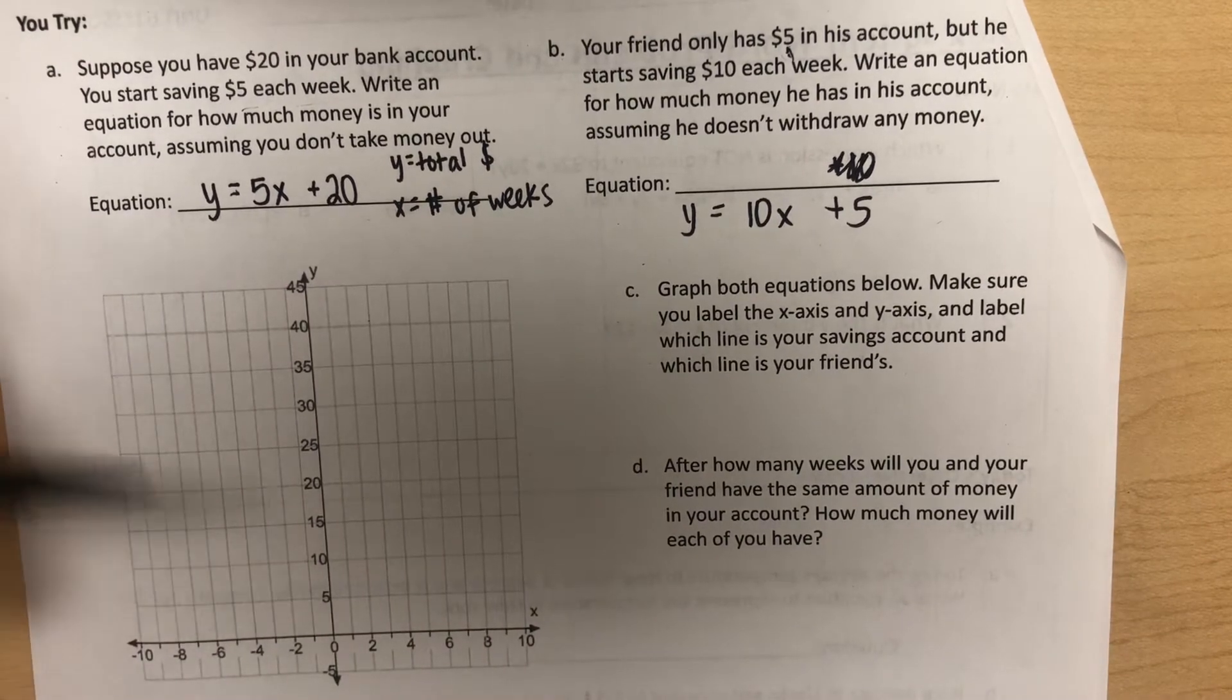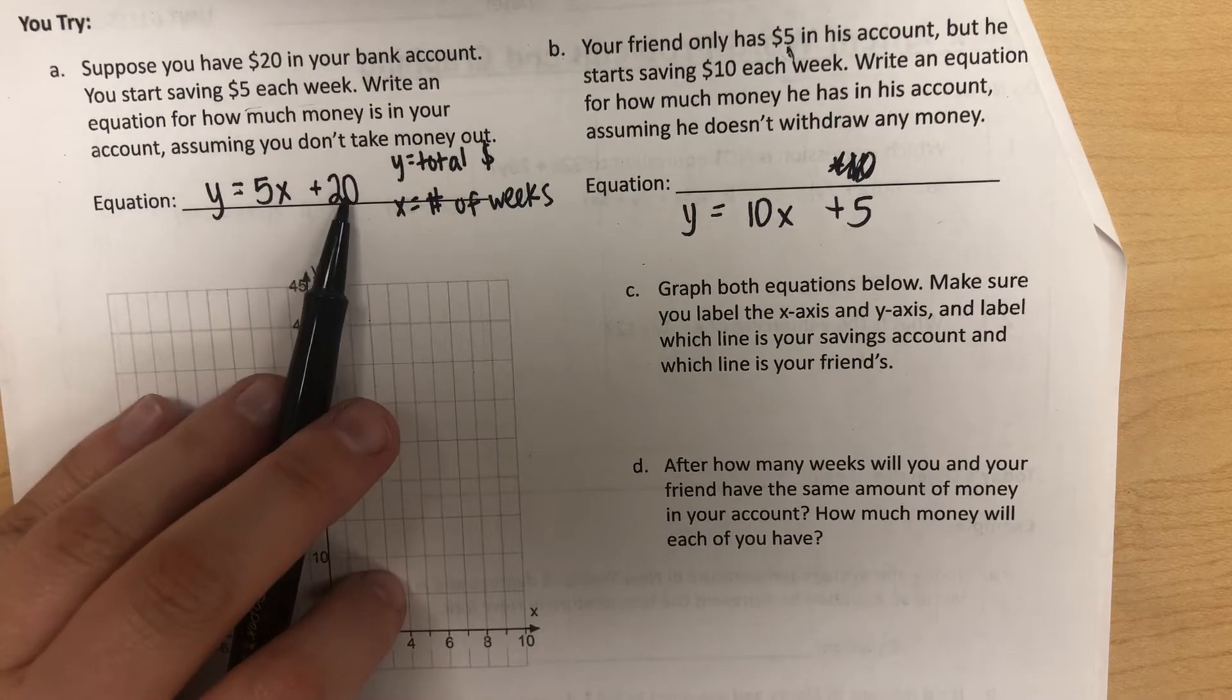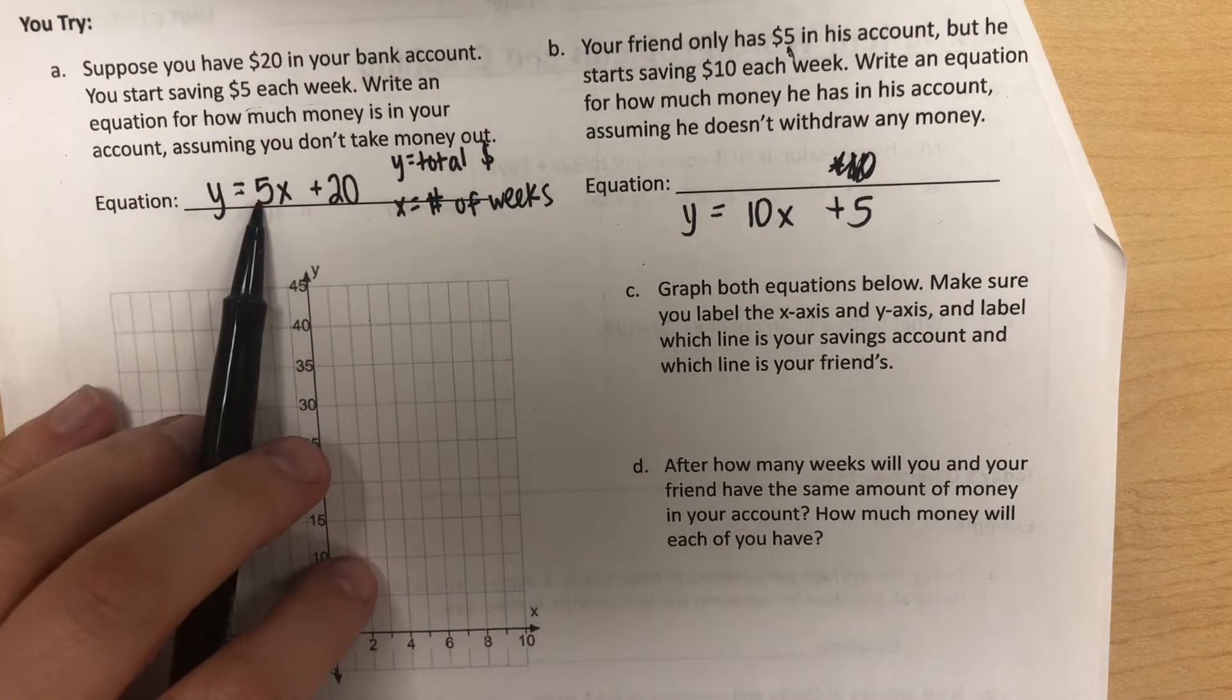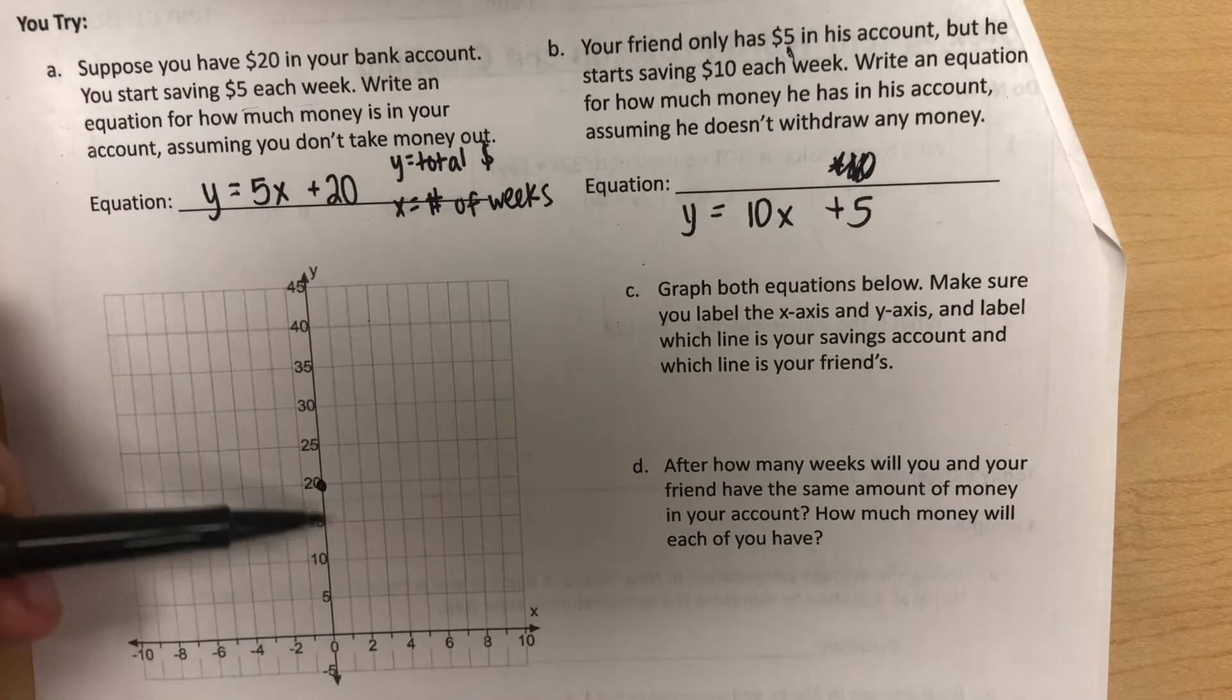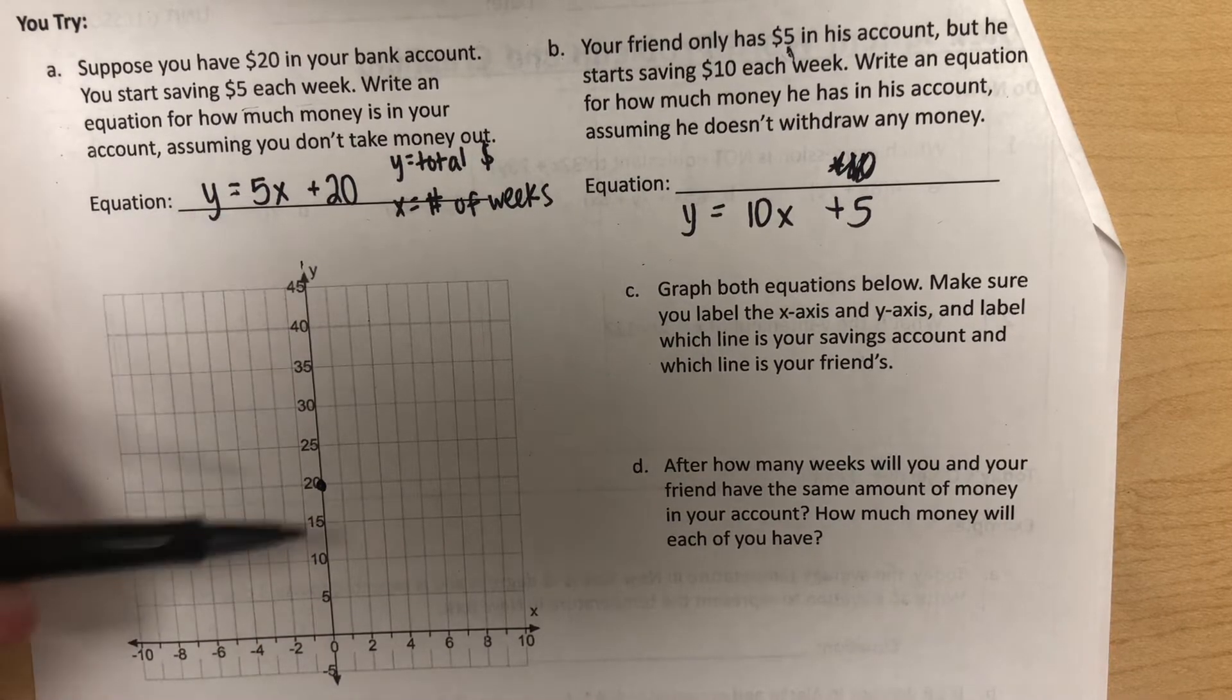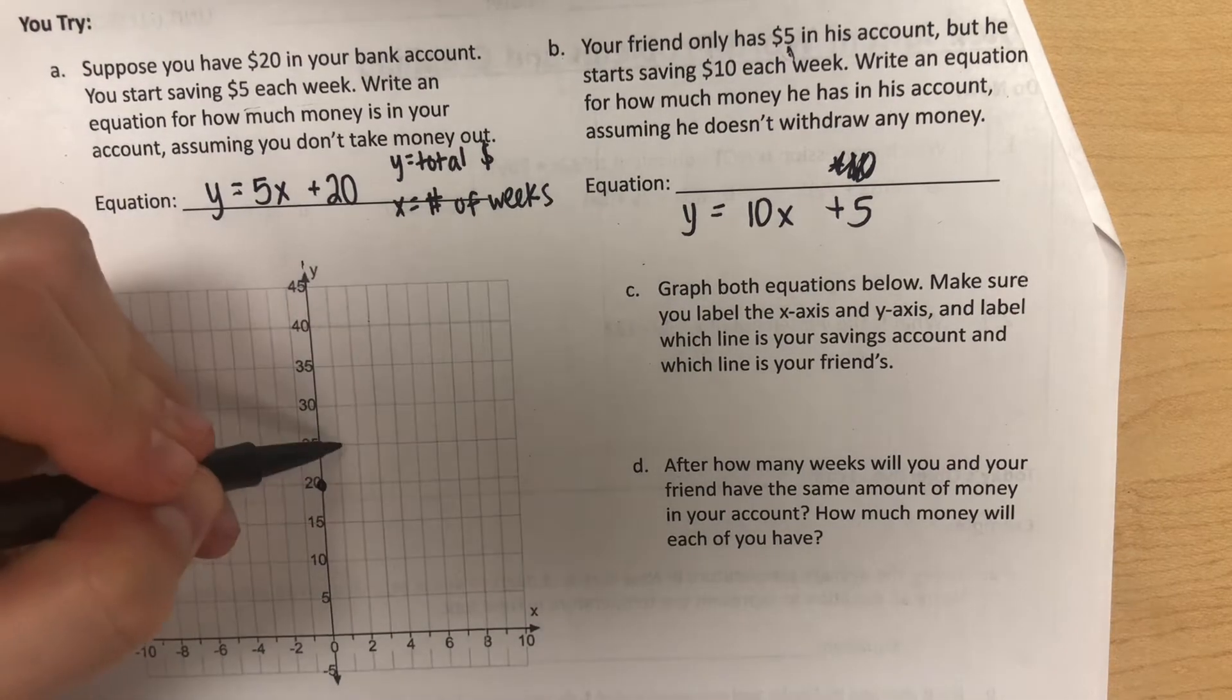I'll start by graphing my first equation. I'm going to start at 20. And then our slope is 5, which means I want to go up 5 over 1. Notice our y-axis is counting up by 5, so if I want to go up $5, I just need to go up 1 box and then over 1.